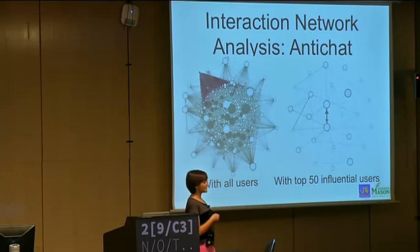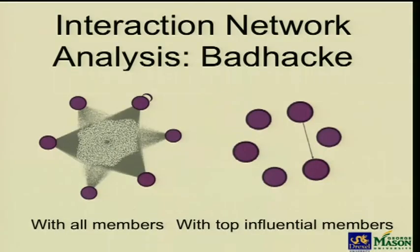After removing non-influential members, you end up with a very dense graph of influential people. From Antichat, we saw that influential users are highly connected with each other. We had ground truth data on who runs a forum for some forums, and eigenvector centrality really identifies the people running the forum. We noticed the same structure in almost all forums except BadHack, where there were only six influential members and everyone else was connected with them, but no connections existed between those influential members.